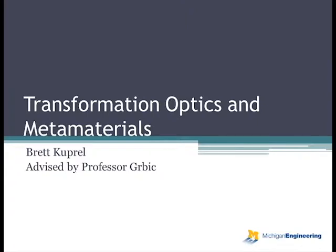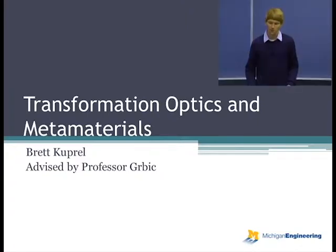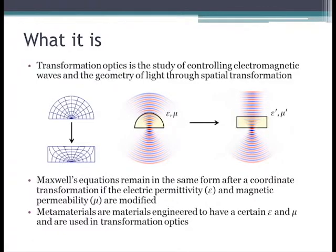So what is transformation optics? It's the study of controlling electromagnetic waves and the geometry of light through spatial transformation. Here's an example. You take this half circle, you distort it into a rectangle, and the result is circular waves are converted to planar waves.